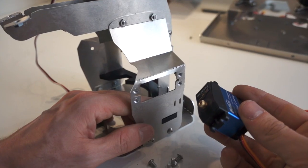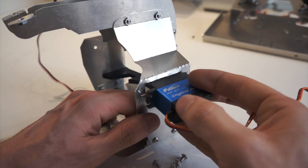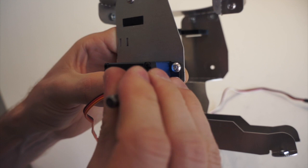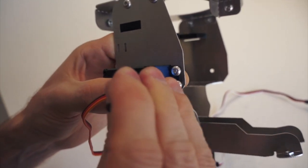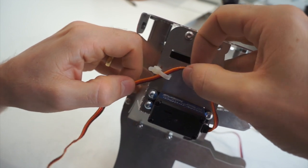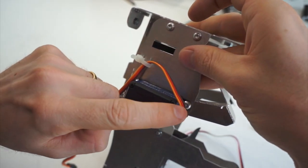Same for the blue servo, make sure it's well oriented, insert it and just screw. Make the wire go through this plastic collar so that it won't touch the wheels.